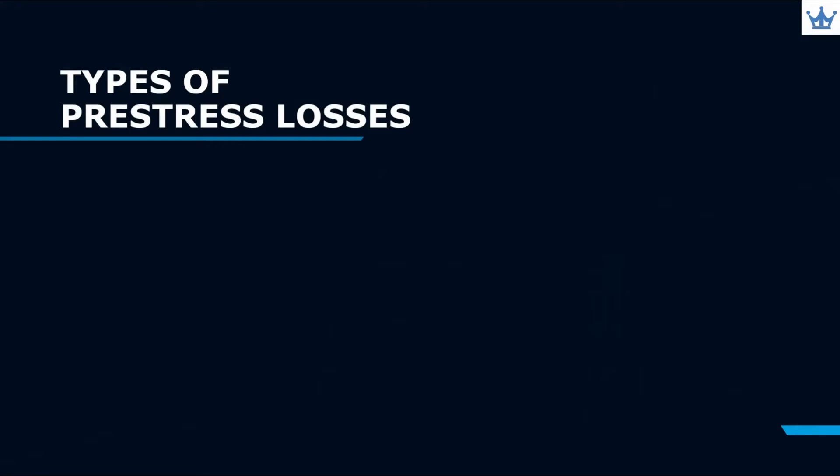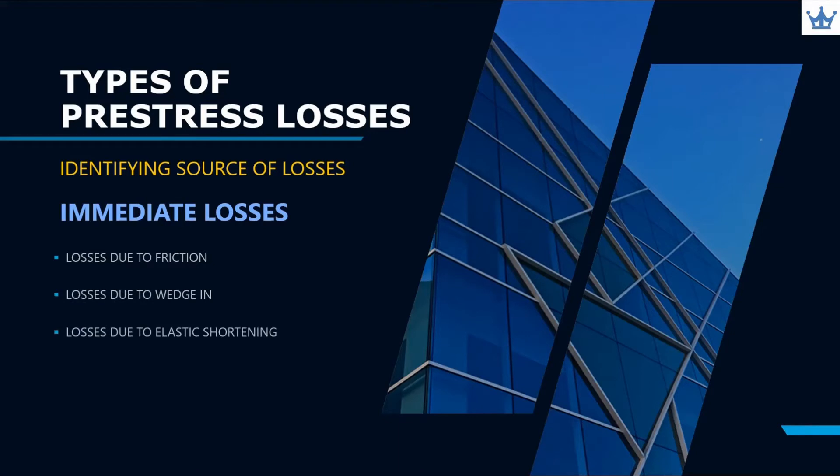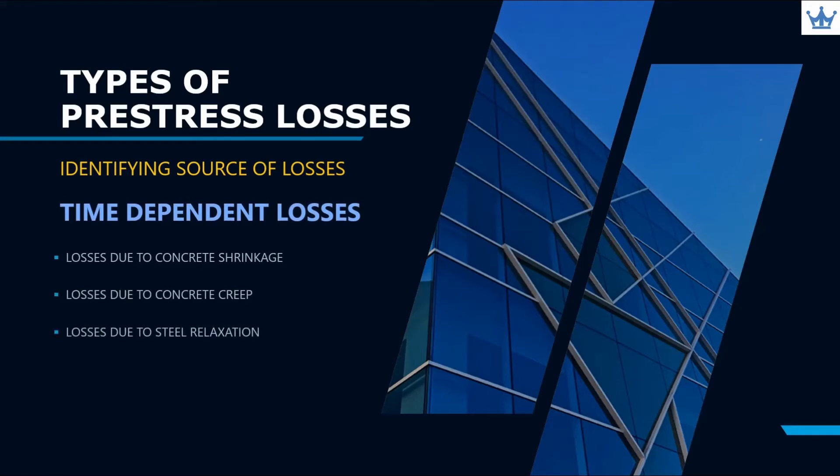Today we will talk about two types of Pre-stress Losses. Immediate Losses and Time Dependent Losses. Immediate Losses consist of Friction Loss, Wedge-in Loss and Elastic Shortening Loss. For Time Dependent Losses, it consists of Shrinkage Loss, Creep Loss and Steel Relaxation Loss.